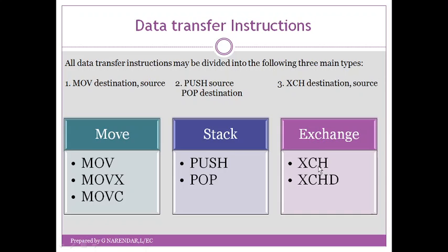The third set of instructions falls under the exchange category, with mnemonics XCH and XCHD. The general format is XCH destination, source. When this instruction is executed, whatever data is at the source is copied to the destination, and whatever data is at the destination is copied to the source location — so data is exchanged, not simply copied. These are the three types of data transfer instructions.